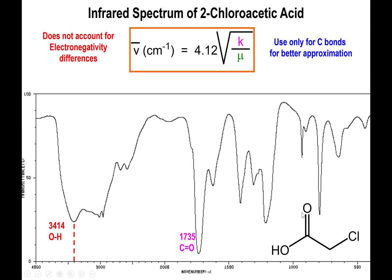Here is another example — this is chloroacetic acid. You still have that strong peak for the carboxylic acid carbonyl carbon at about 1700. But you also have a strong, broad peak above 3000. In this case, the peak is so broad that it goes all the way down to almost 2000.